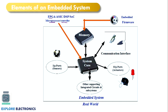Along with the system core, we have a memory unit. In this memory, we will store a program — the code that defines the functionality of the embedded system. So memory is required and it communicates with the system core. This is called firmware or software. The embedded software stored in memory works with the system core. We also have input, output, and supporting integrated circuits — together forming the embedded system.